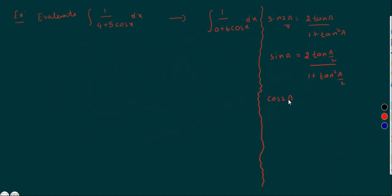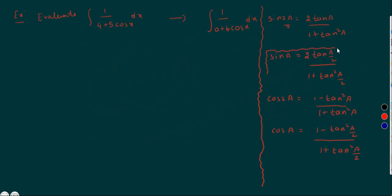Next, cos 2a equals (1 minus tan square a) by (1 plus tan square a). So the sub-multiple formula of cos a equals (1 minus tan square(a/2)) by (1 plus tan square(a/2)). The main important formulas: sin a = 2 tan(a/2) by (1 plus tan square(a/2)), and cos a = (1 minus tan square(a/2)) by (1 plus tan square(a/2)).